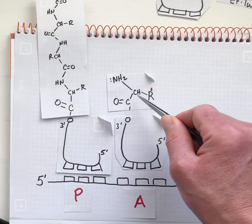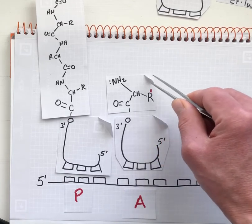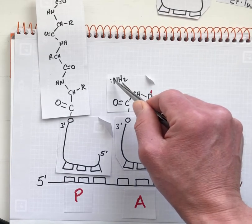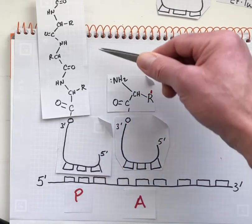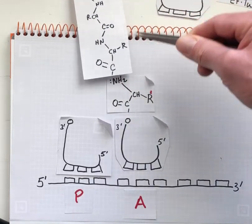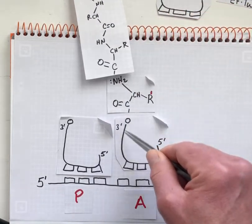Now this aminoacyl tRNA is poised for catalysis. It can undergo that nucleophilic reaction to move the peptide onto the amino group of this aminoacyl tRNA.